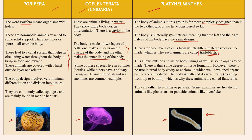This allows outside and inside body linings as well as some organs to be made, with some degree of tissue formation. However, there is no true internal body cavity in which well-developed organs can be accommodated. The body is flattened, which is why these animals are called flatworms. They are either free living or parasitic — examples include free-living planaria or parasitic liver fluke.